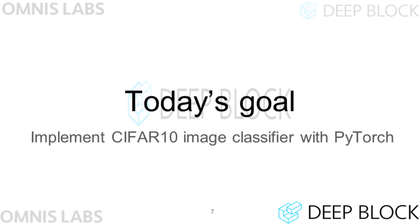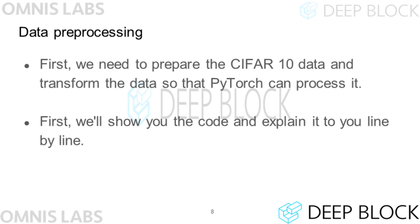In this lecture, we will build a CIFAR-10 classifier with PyTorch. In the implementation process, I will explain how PyTorch works and its basic syntax. By learning how to implement the model we designed in the previous lectures, we will learn how to use PyTorch. The first thing to do is prepare the training data for the neural network. Prepare a code file called CIFAR10PyTorch.py and add the code that will be described from now on.